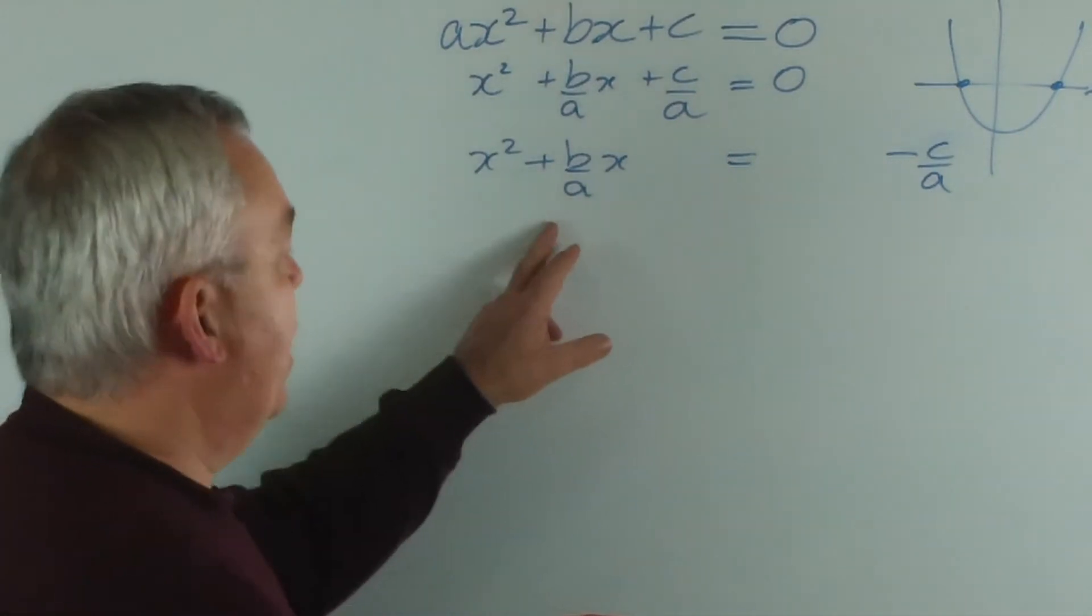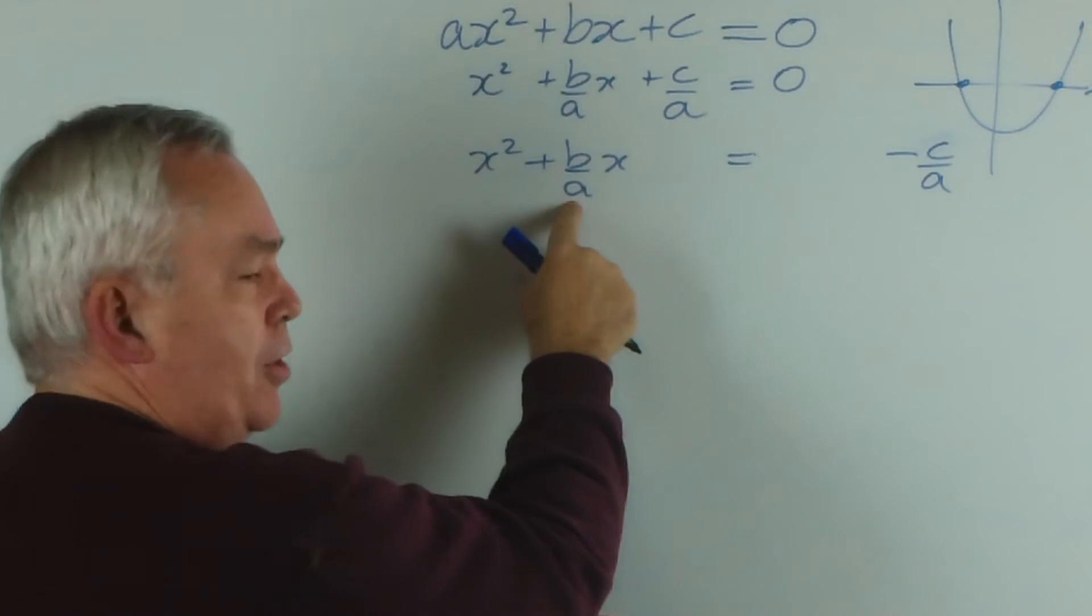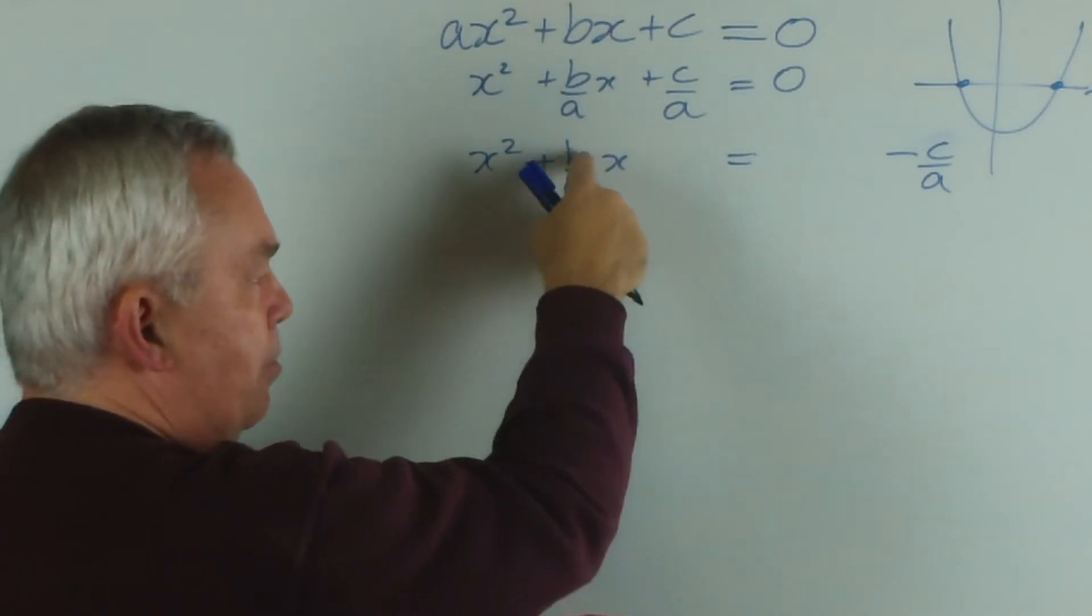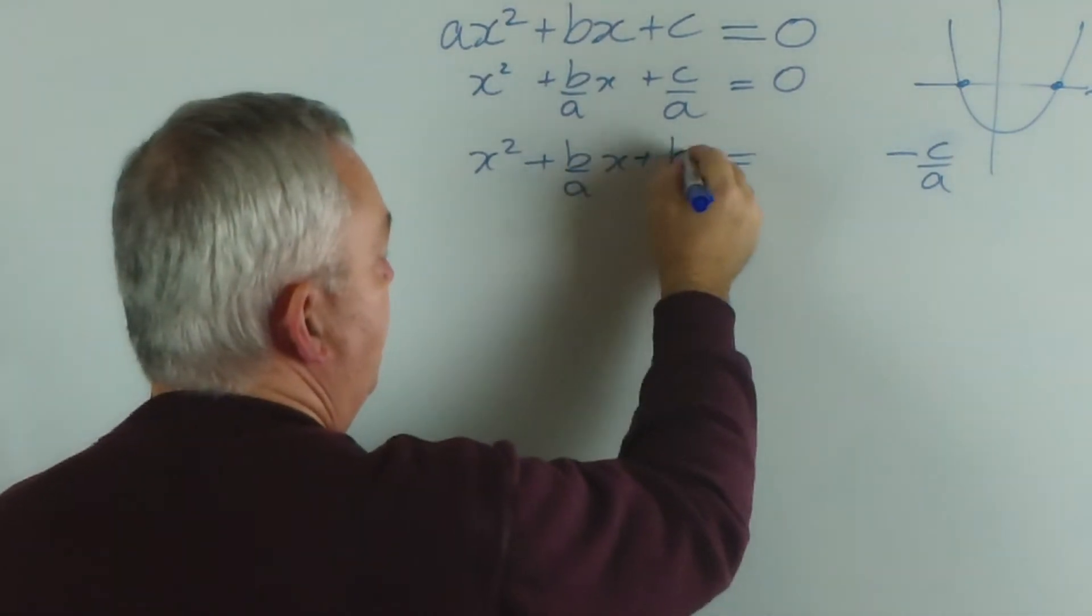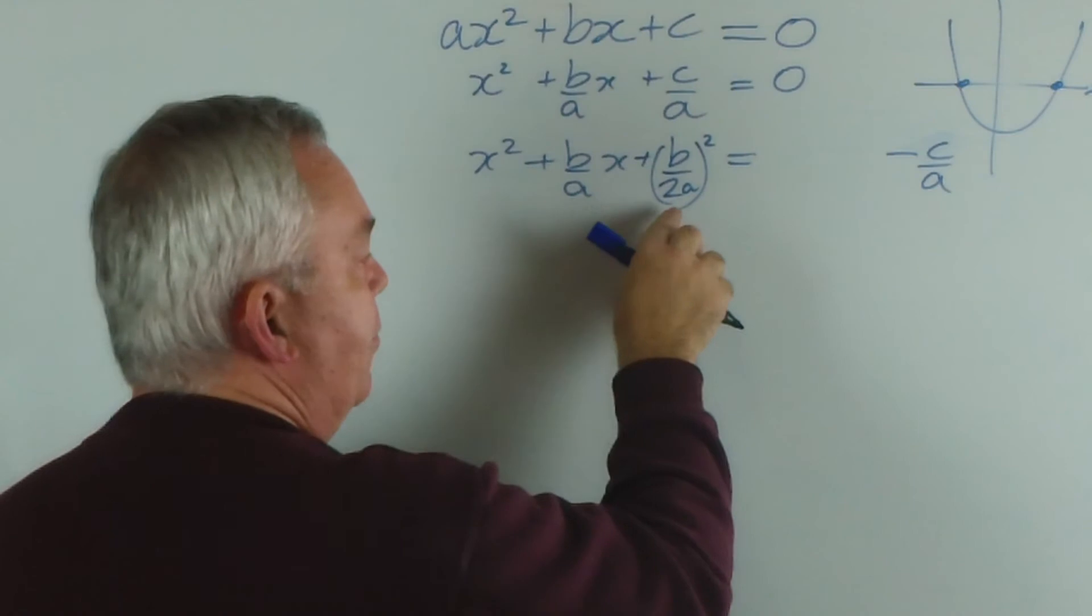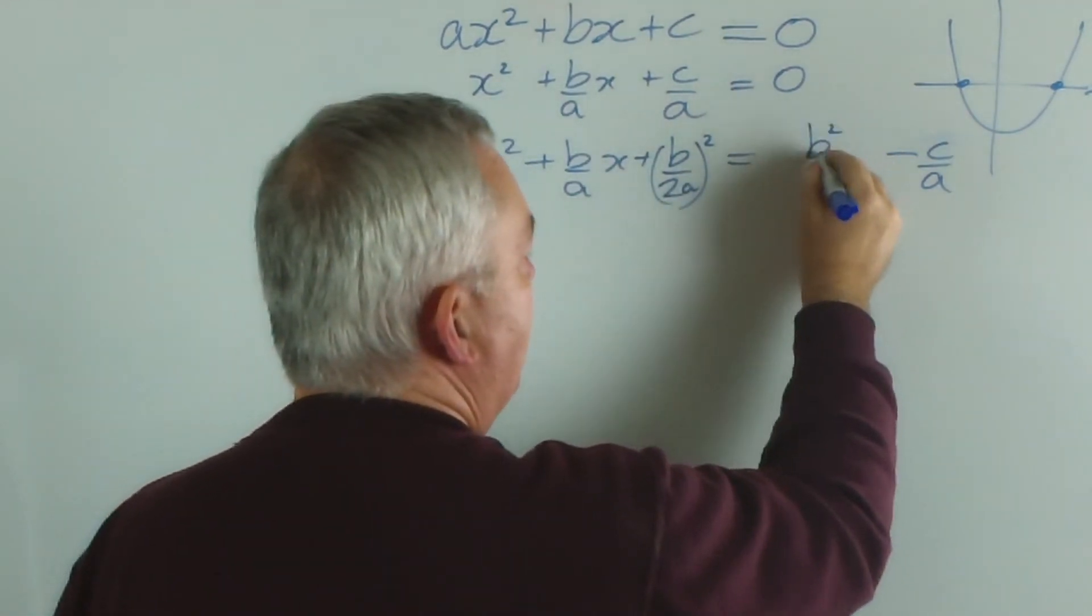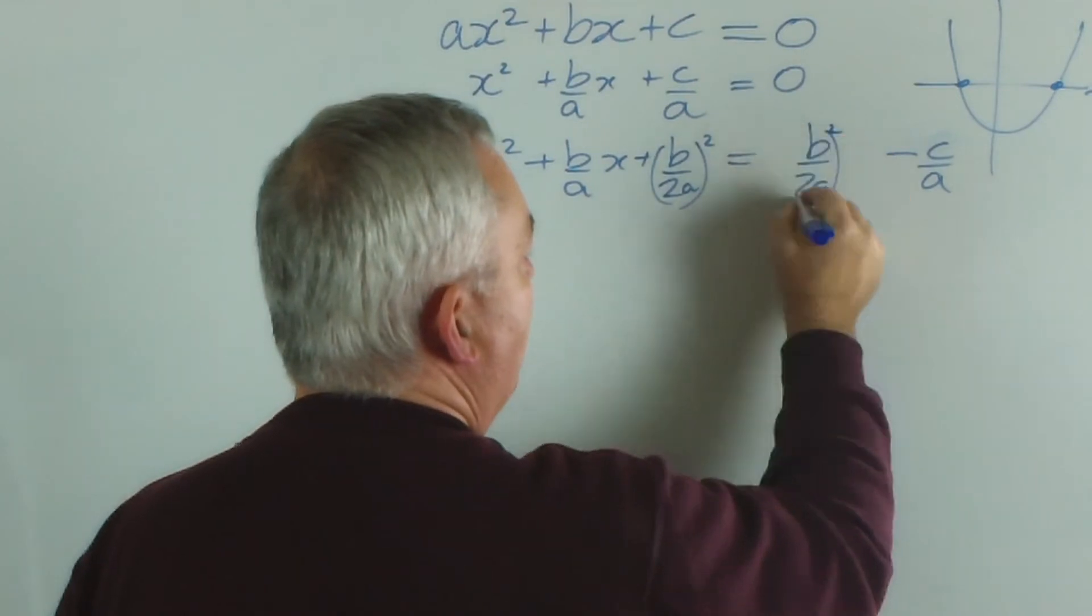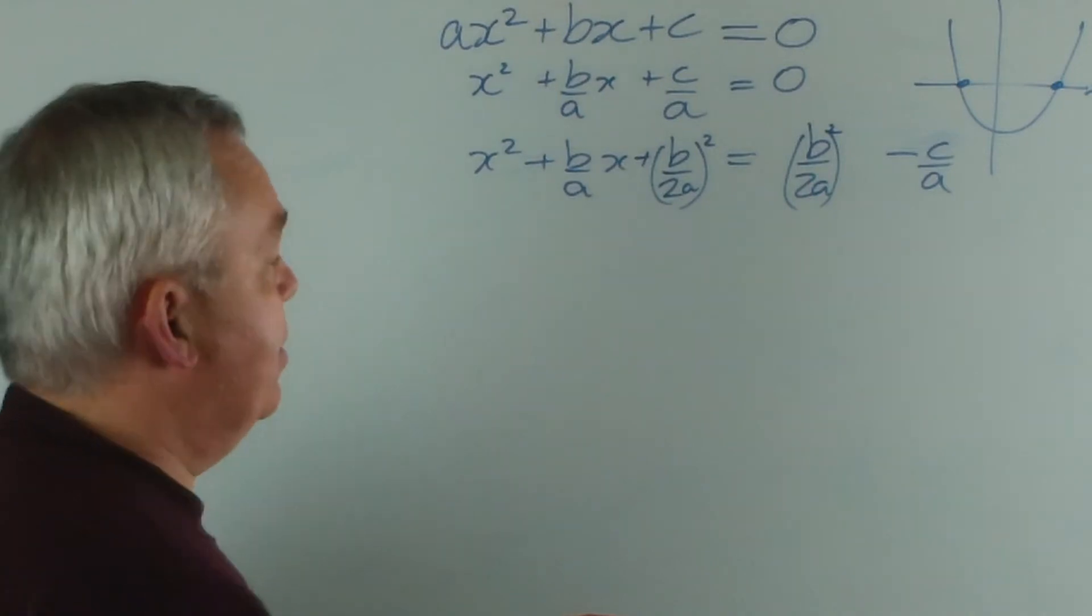And now we're going to complete the square. To complete this square, we halve the coefficient of x, which is not b on a but b on 2a, and square it. And of course, if we add it on this side of the equation, we have to add it on the other side. Now that equation is still balanced.